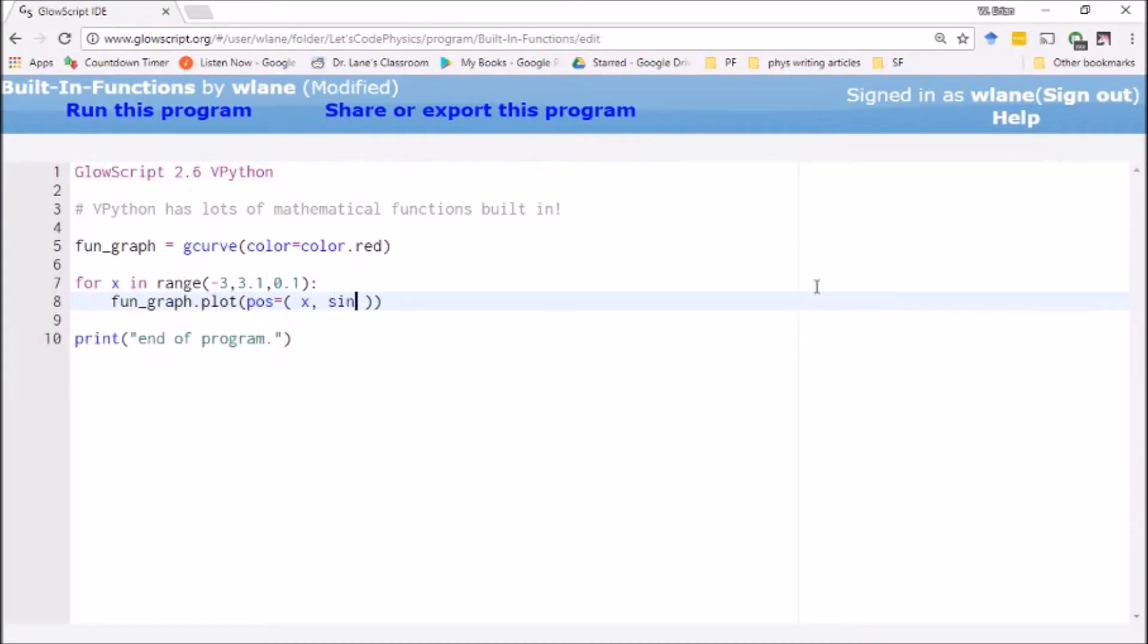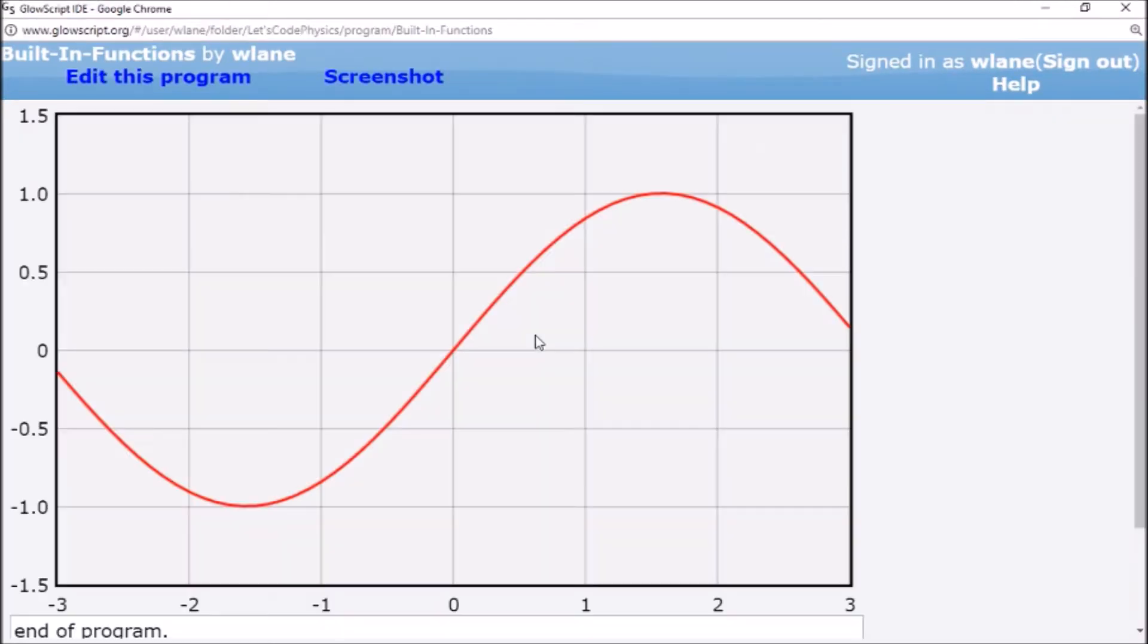It, of course, also knows your trigonometric functions. Let's try sine of x. Now, of course, the question you always want to ask anytime you're working with a computer and you're dealing with trig functions is whether it's working in radians or degrees. So let's find out whether it's working in radians or degrees here. Here's my sine curve. This is what I expect a sine curve to look like.